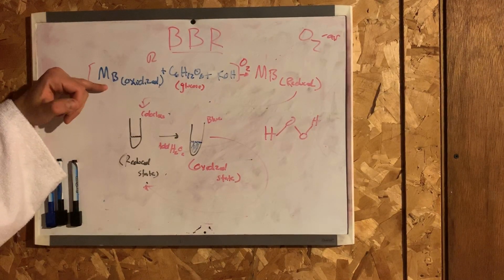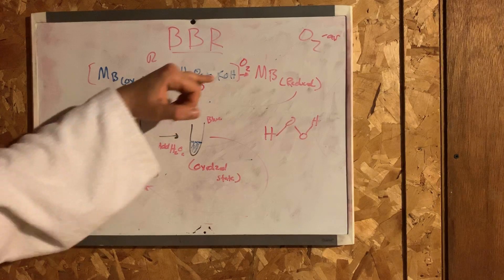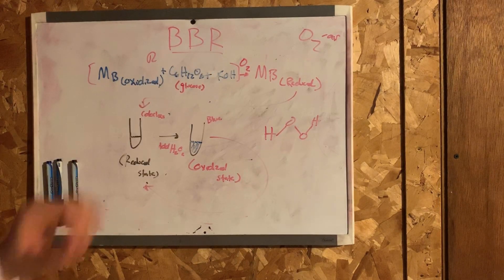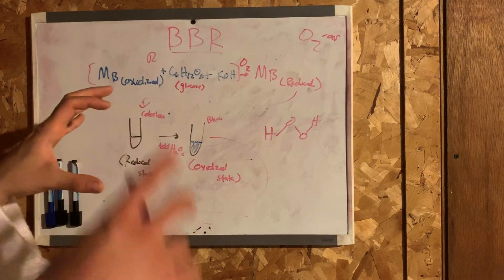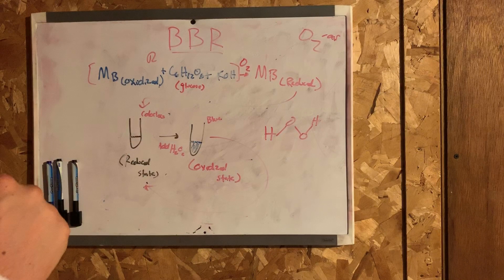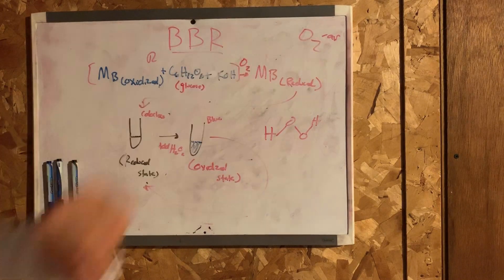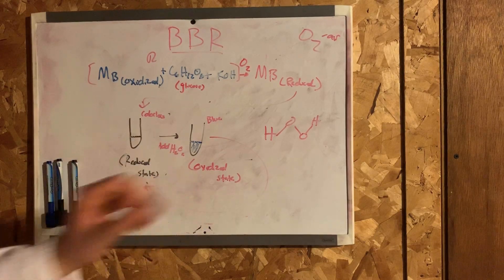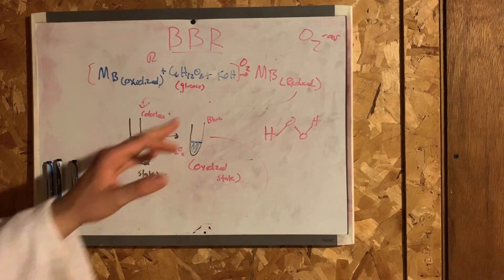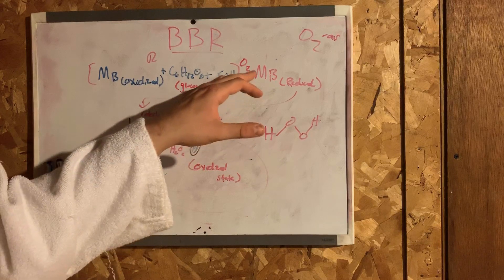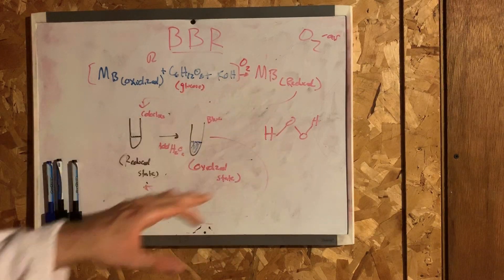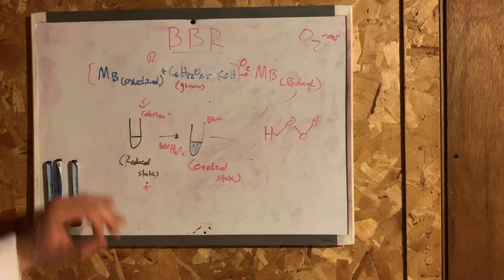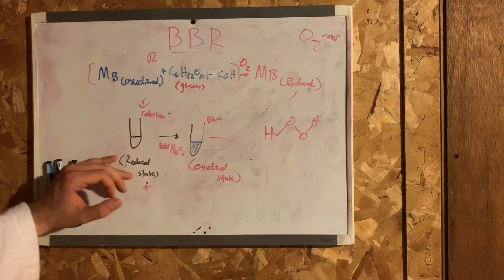Let's focus on this equation: methylene blue, glucose, and potassium hydroxide. When these sets of molecules interact with oxygen present in the air, they become oxidized, making the solution blue in color — this is the oxidized state. In its reduced form, the methylene blue is colorless — that's the reduced state.